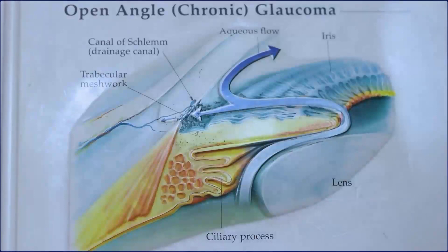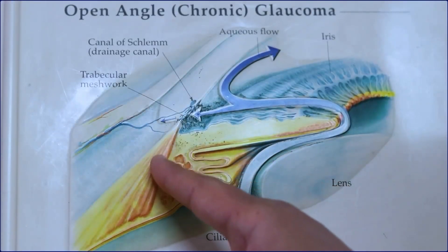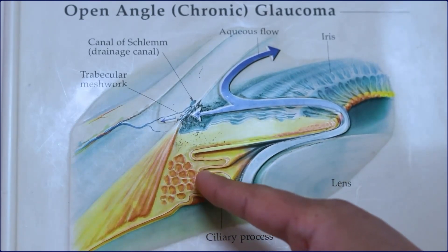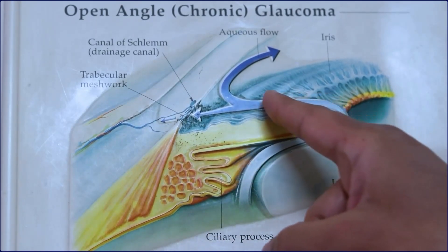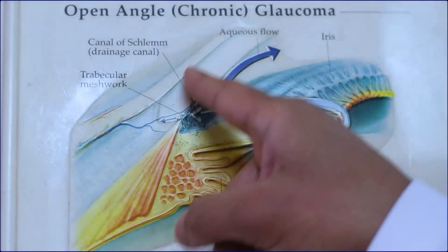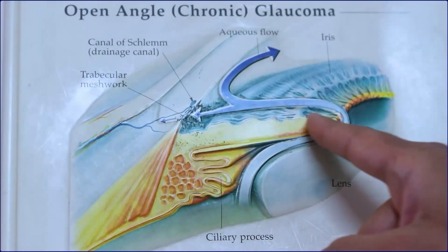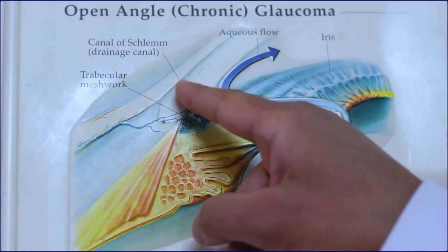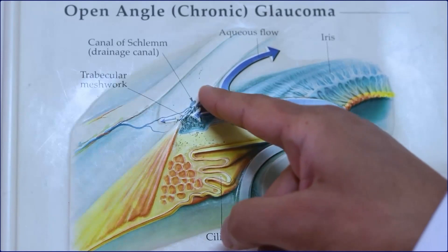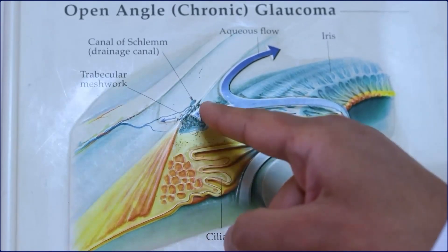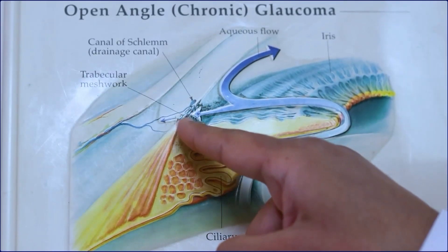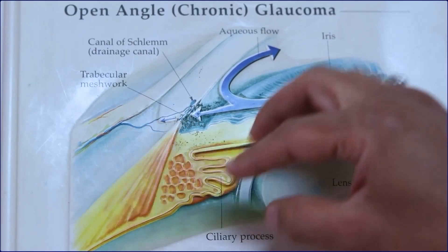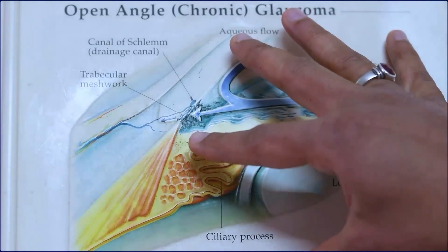There's a fluid called aqueous humor, which is secreted in this structure called the ciliary body. The aqueous humor comes to the front part of the eye and goes out of the eye from this area called the angle of the eye. In this angle, there is one small sieve-like filtering structure called the trabecular meshwork. Any obstruction of any kind to this trabecular meshwork will block the flow of the aqueous humor outside, and hence there is an increase in the intraocular pressure.